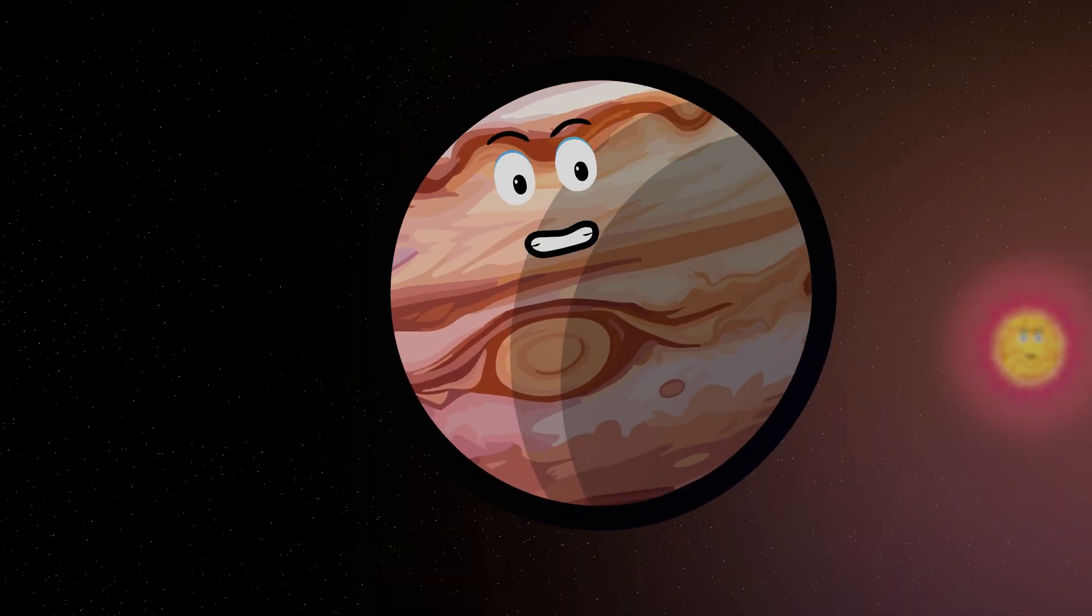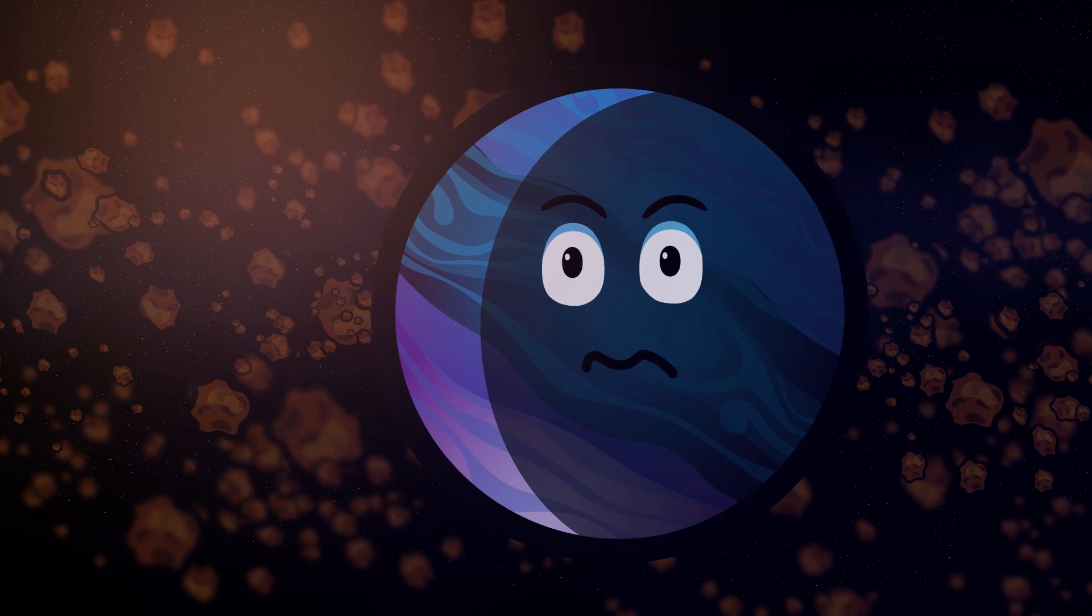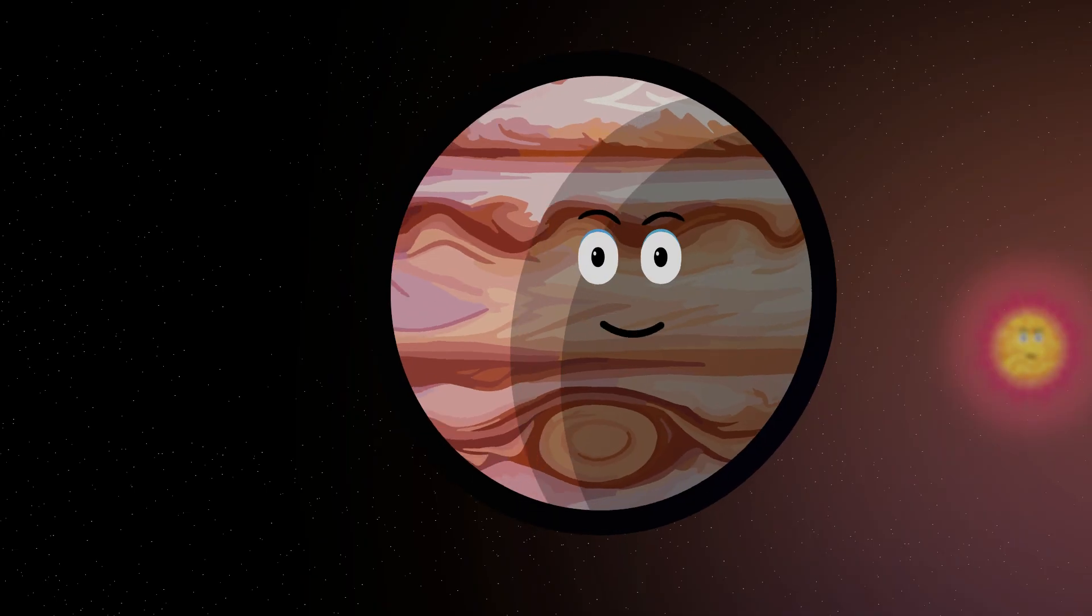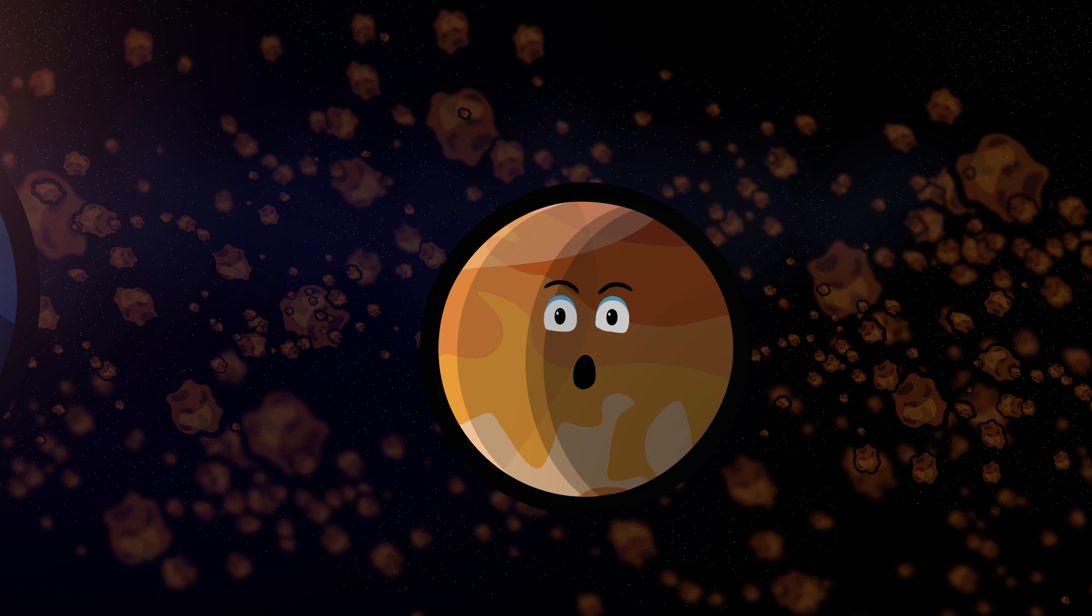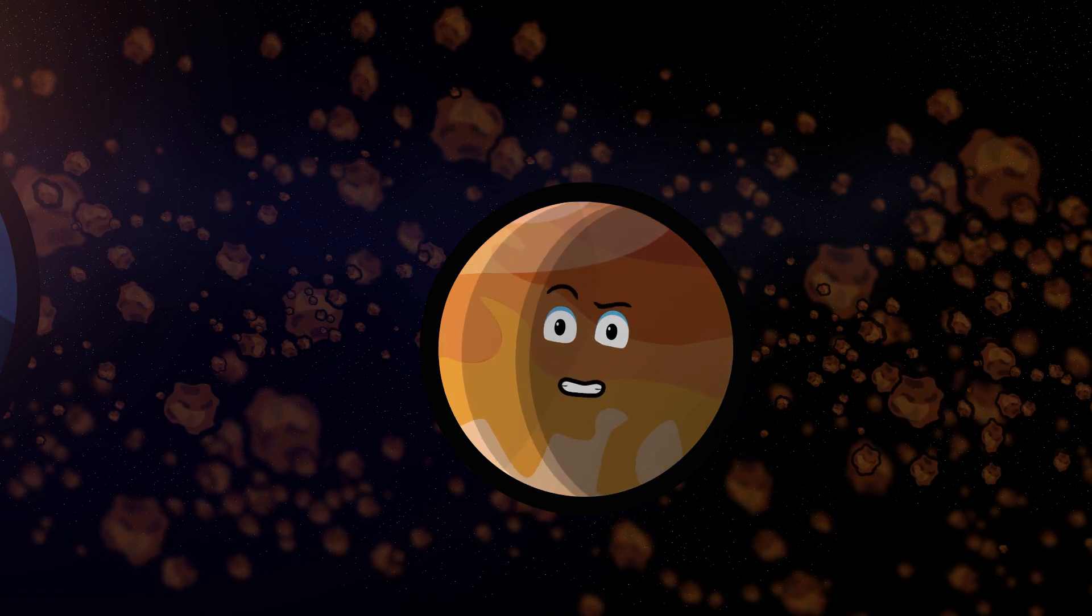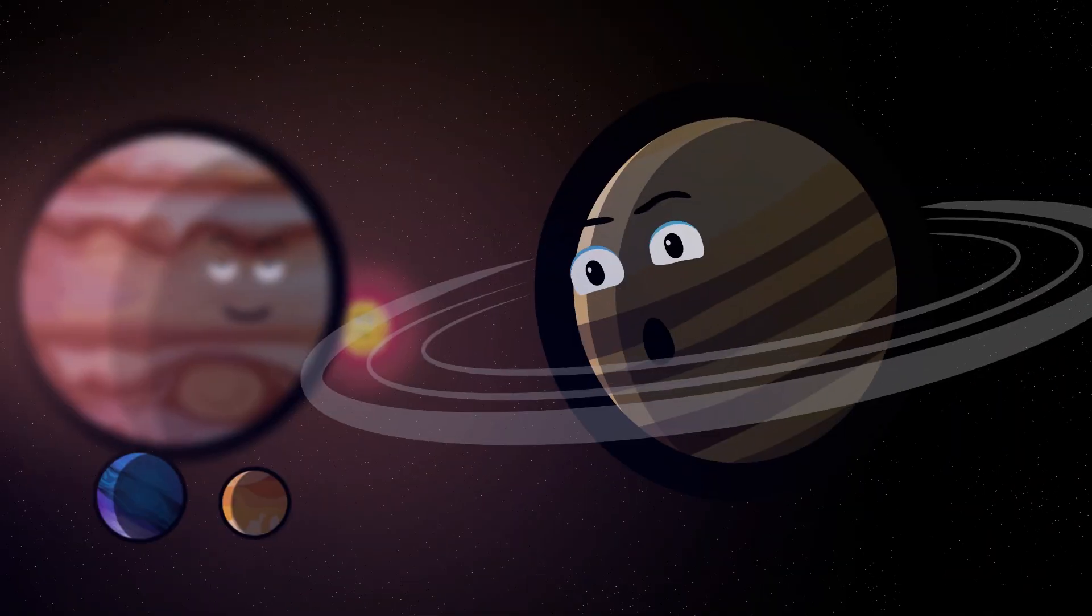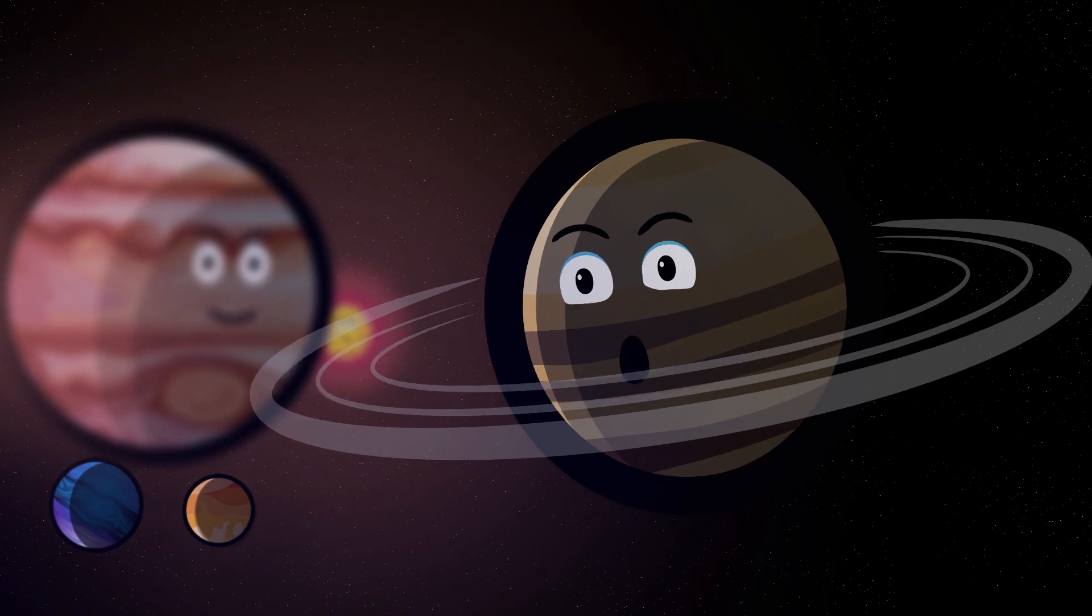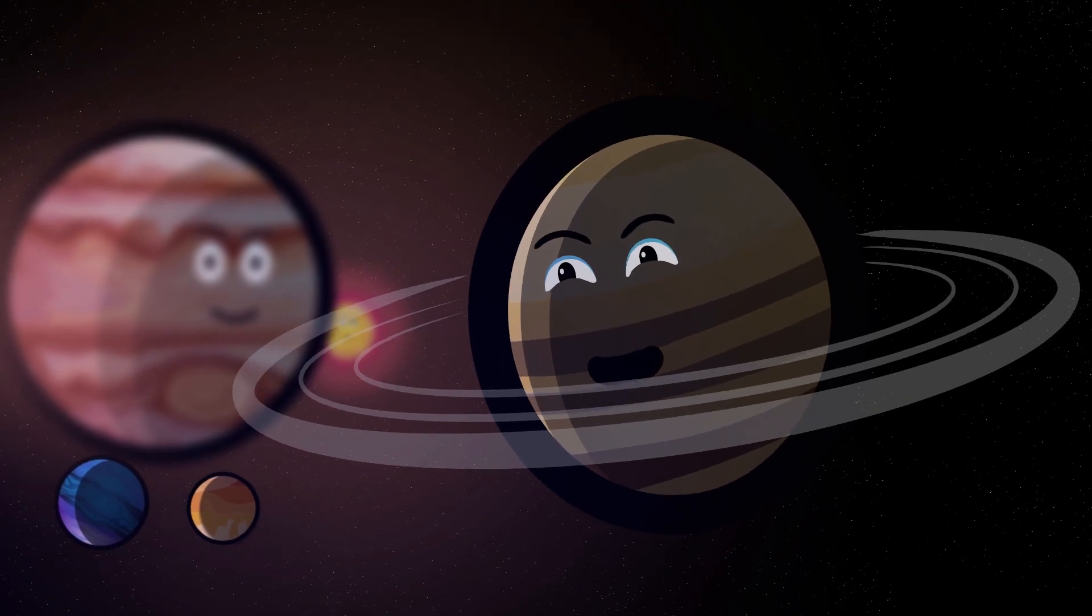So do any planets or moons live there? Good question, Venus. There aren't any full-sized planets in the asteroid belt, but there are some small objects called dwarf planets. There's one called Ceres, which is the largest object in...